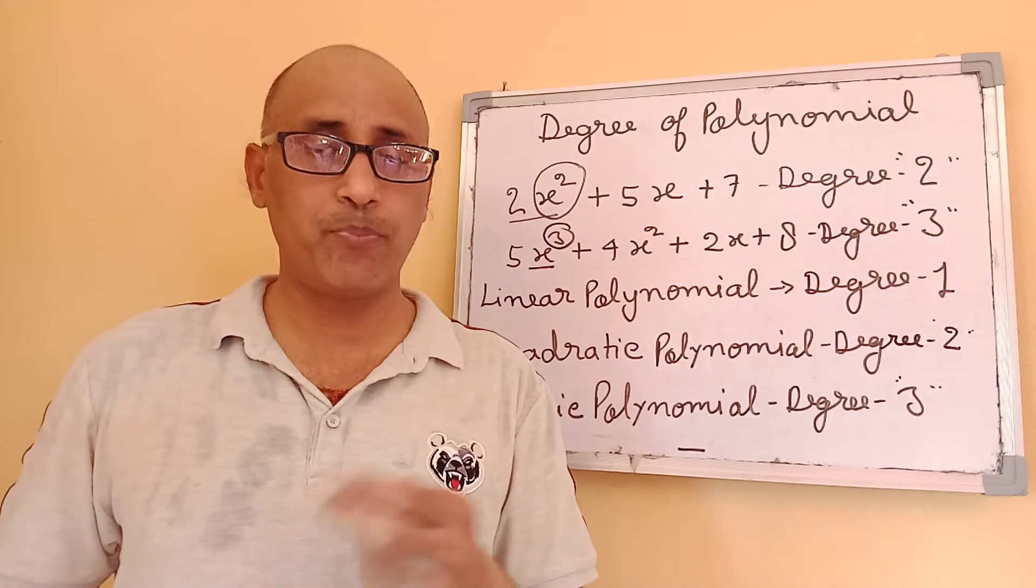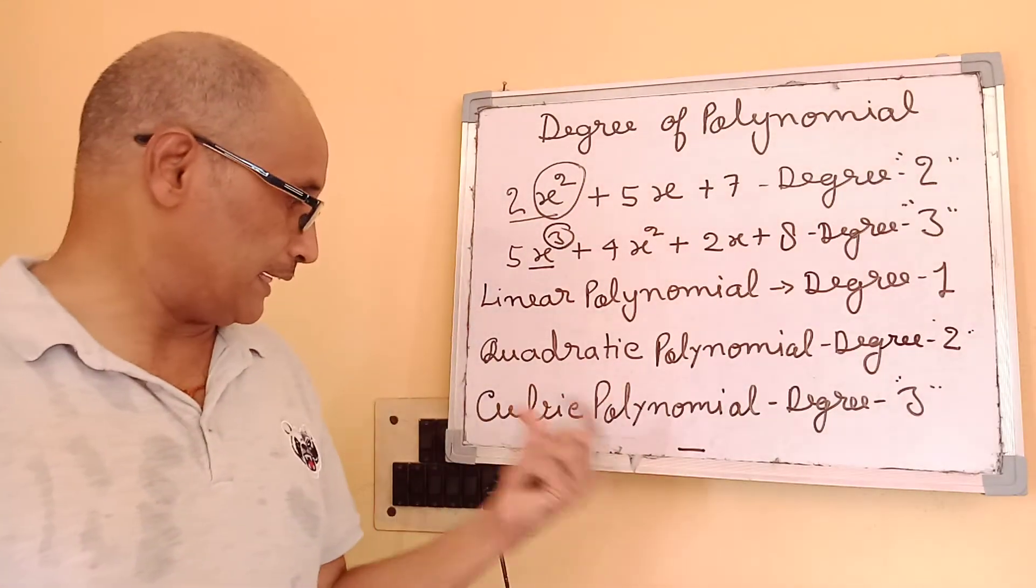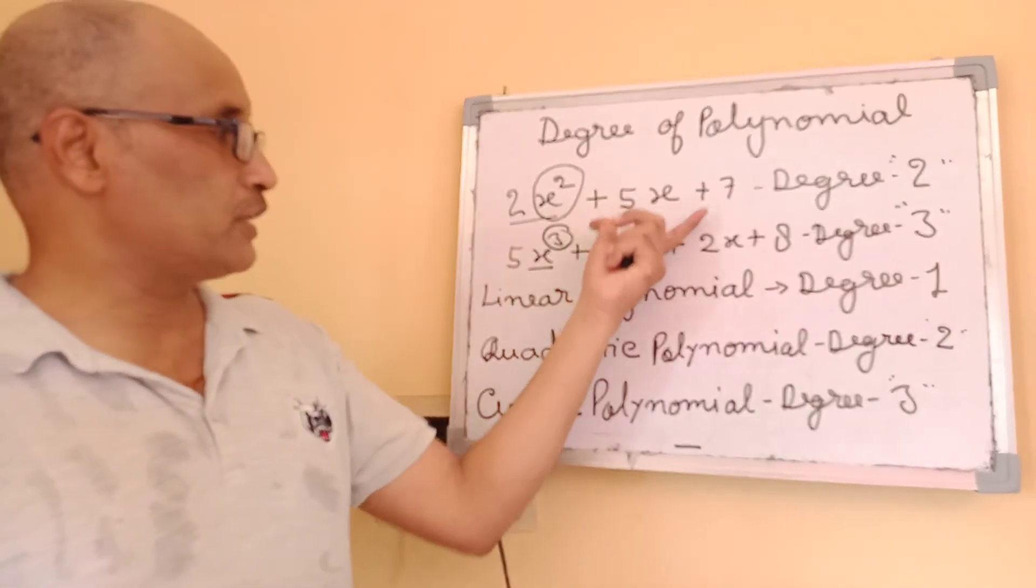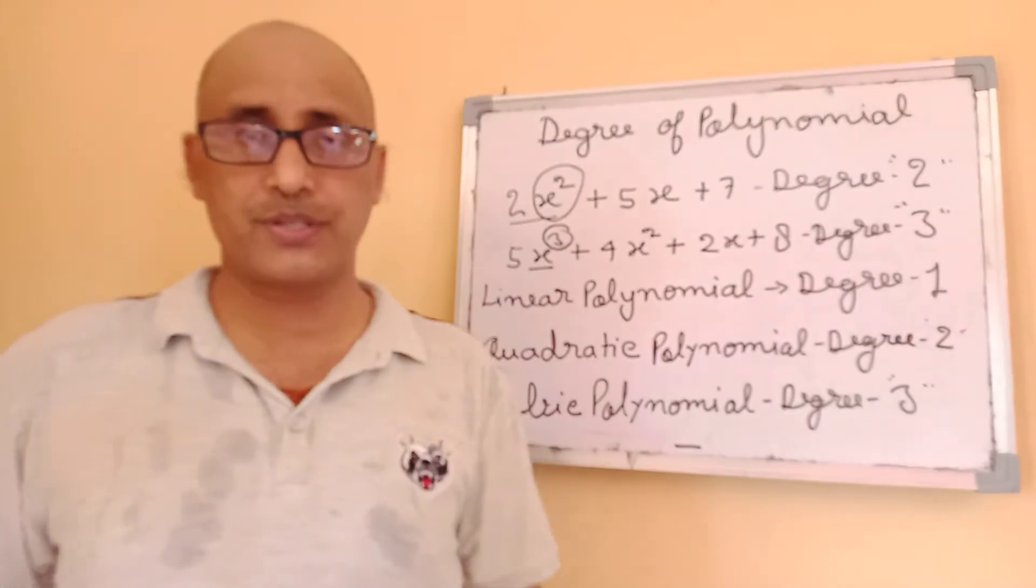And if a polynomial has degree 3, that is called a cubic polynomial. As far as these two equations are concerned,